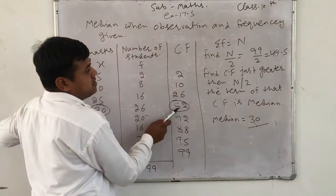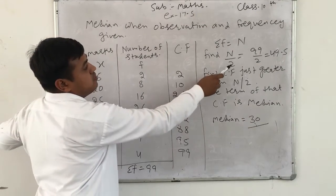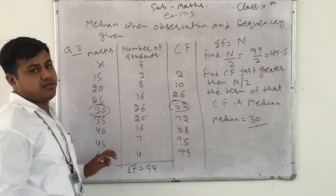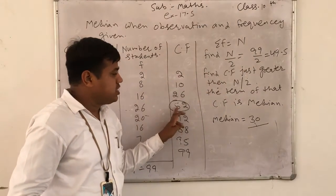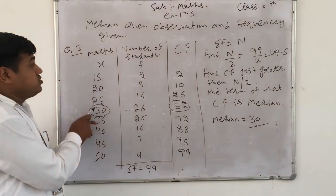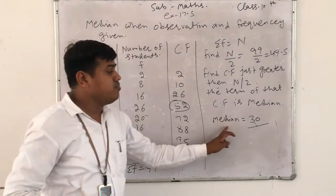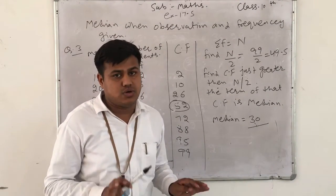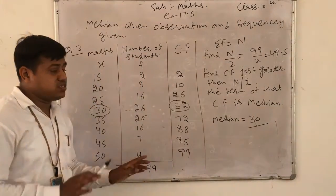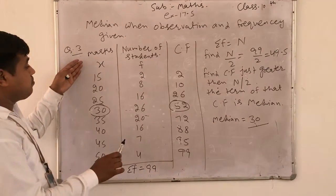Term just greater than the CF of n upon 2 is the median. So n upon 2, just the bigger CF, the term, the marks, the observation is the median. Mean, mode, median, which is the answer is the frequency. The answer is the observation.